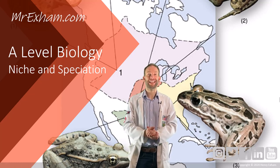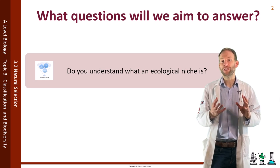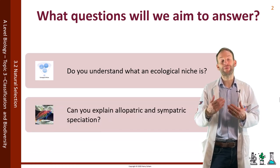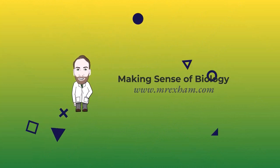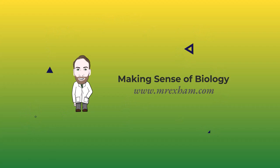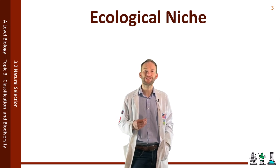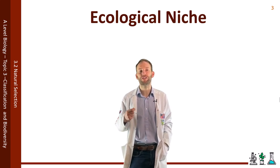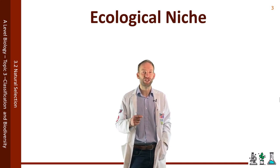This video is on natural selection. Do you understand the term ecological niche? Can you explain allopatric and sympatric speciation? Now for a species to survive and be successful it will need to be very well adapted to its environment. Eventually it will find a particular role to play in its ecosystem and this is what we call its ecological niche.